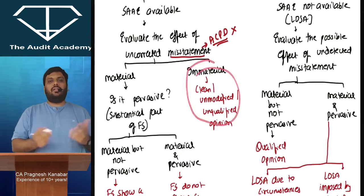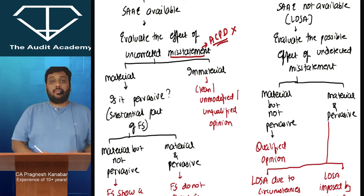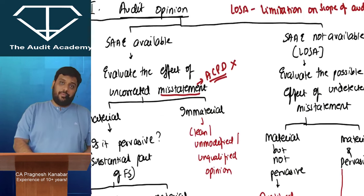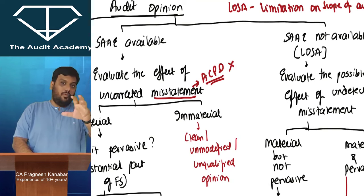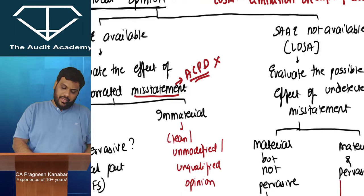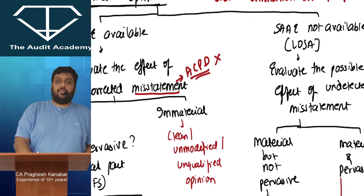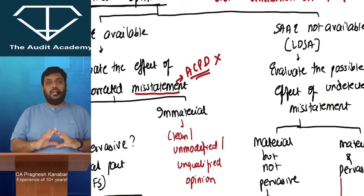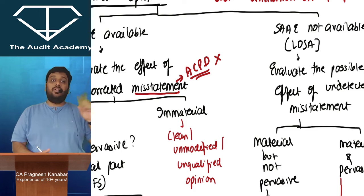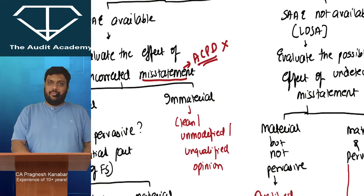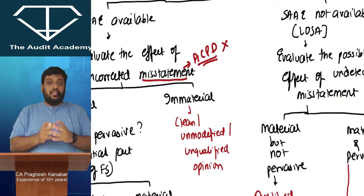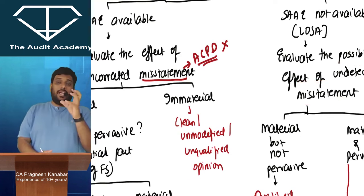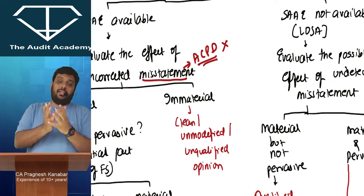If the effect of uncorrected misstatement is immaterial, you go with a clean opinion. Now for a more sensitive discussion: if sufficient and appropriate audit evidence is not available, I use the word LOSA — limitation on scope of audit. LOSA means the auditor tried everything but evidence is still not available. After LOSA, there is no discussion of further audit procedures; the conclusion is final that evidence is not available.